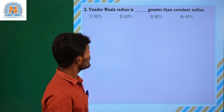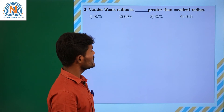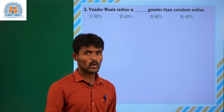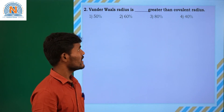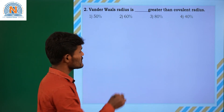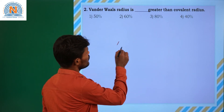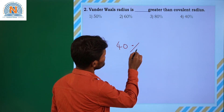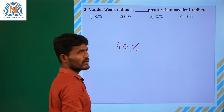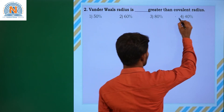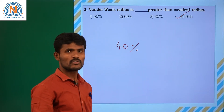Second question: Van der Waal radius is how much greater than covalent radius? Actually, Van der Waal radius is 40 percent greater than covalent radius. So the answer is the fourth option.